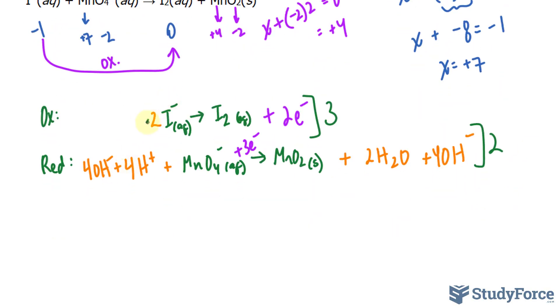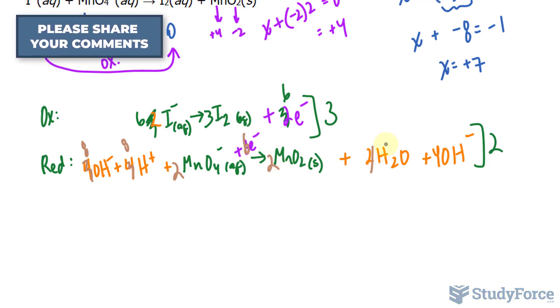What this will do is make this into a six, that into a three, and this into a six. And if I multiply everything here by two, this becomes eight, eight, two, six, two, four, and eight.